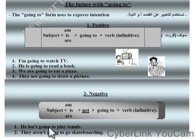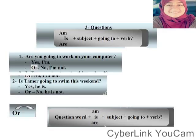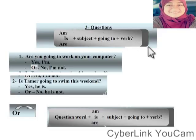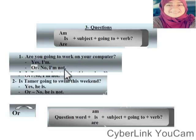'He isn't going to play tennis.' — isn't or is not, both are correct. It's very simple and very easy. For the question, we use am/is/are first, then subject + going to + verb. For example: 'Are you going to work on your computer?' Answer: 'Yes, I am' or 'No, I'm not.'